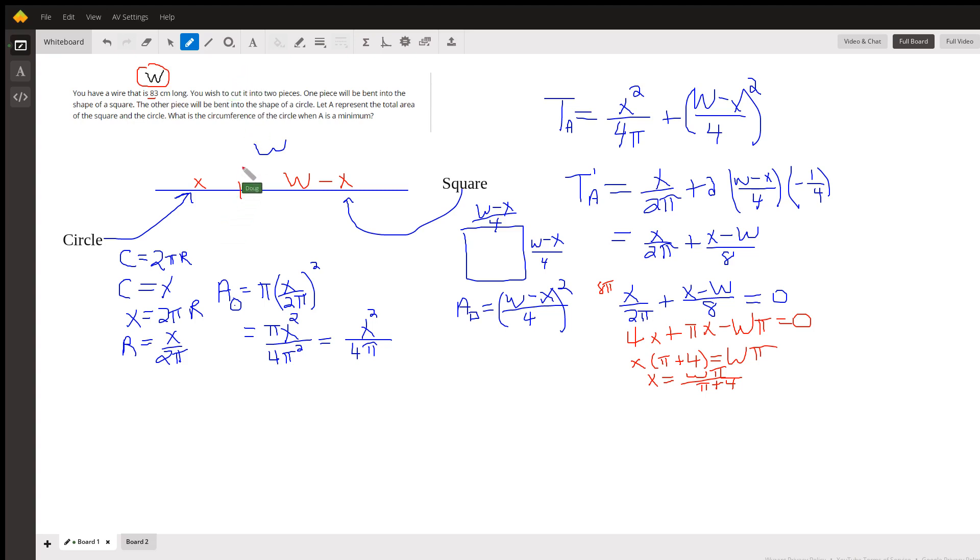And we're going to cut it into two pieces. Let's let one of the pieces be represented by the variable x, and then that means the other piece will have a length of W minus x.